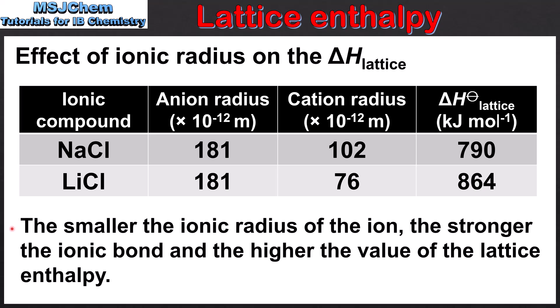To summarize: the smaller the ionic radius of the ion, the stronger the ionic bond and the higher the value of the lattice enthalpy. This explains why lithium chloride has a higher lattice enthalpy than sodium chloride.